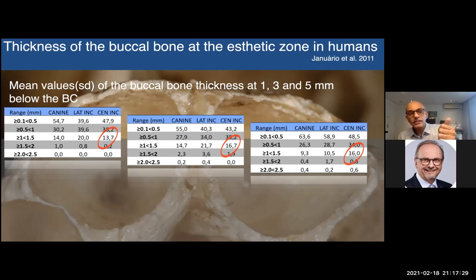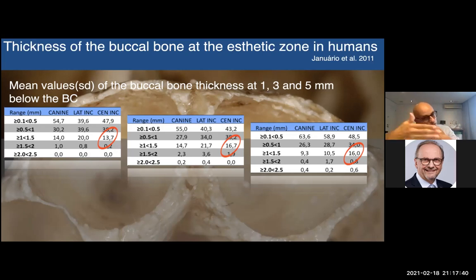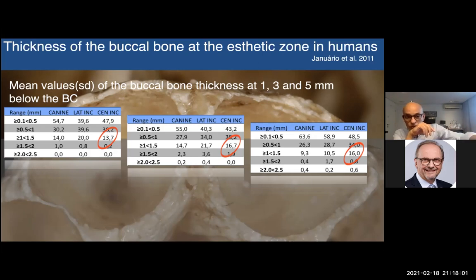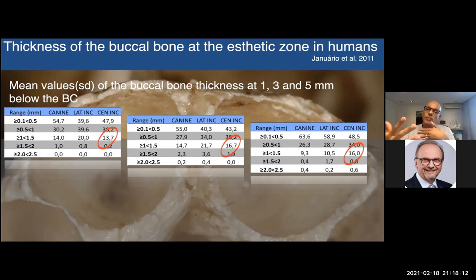Looking at the lateral incisor, 40% of the buccal wall has a thickness of less than 0.5 millimeters — again, the entire thickness is made of only bundle bone. For the central incisor, basically 50% are made of only bundle bone one millimeter below the bone crest. Only about 50% of these tooth sites have a buccal wall thicker than one millimeter. If it's thicker than one millimeter, most of the buccal wall is not made of bundle bone.